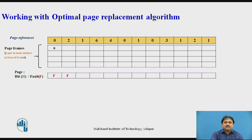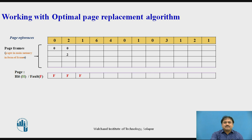In the second case, I require page number 2 — again a page fault since page 2 is not in main memory. I have three empty locations available, so I store page 2 in an empty space. For the third case, page number 1 is required — again a page fault. I bring it from secondary memory into the third slot. Then page number 6 is required — another page fault — but empty spaces are available, so I bring page 6 into main memory.